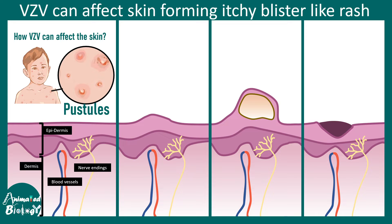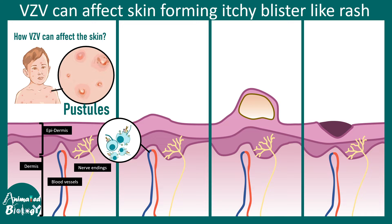How does varicella zoster virus affect the skin? Blood vessels underneath the dermis carry circulating T cells which harbor the zoster virus. These T cells use the bloodstream like a vehicle to arrive at their destination. They then release the viruses, which infect the epidermal and dermal cells. The infected T cells exit through the bloodstream, infect the epidermis, and form macules and papules.